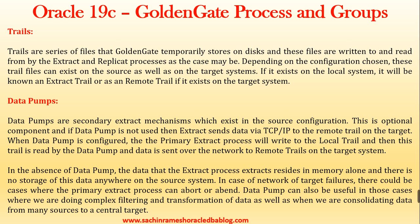Trail files are a series of files that GoldenGate temporarily stores on disk. These files are written to and read by the extract and replicate processes as the case may be. Depending on the configuration chosen, trail files can exist on the source as well as the target system — known as an extract trail on the source, or a remote trail if on the target system.